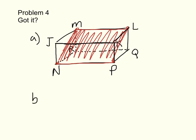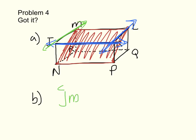Part B: what is the name of a line that is coplanar with line JK and line KL? Those two lines lie on the top face of the box. You need another line on that same plane. You could say line JM or line ML — either one of those would be a correct answer.